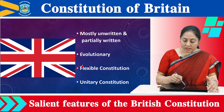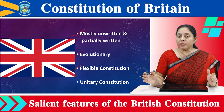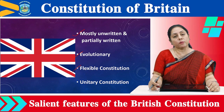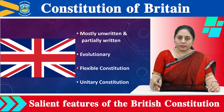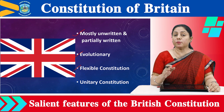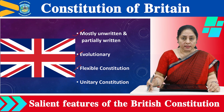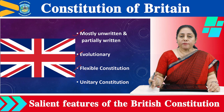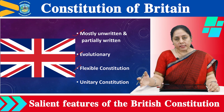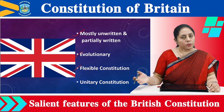The third feature is its flexibility. It is a flexible constitution and is considered to be the most flexible constitution in the world, whereas the Constitution of the US is considered to be the most rigid. The reason is that the Constitution of Britain is unwritten and there is no difference between ordinary law and constitutional law.